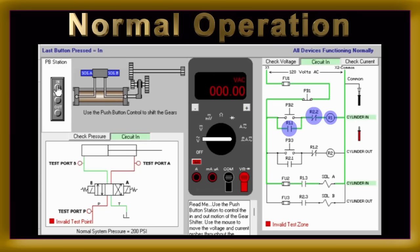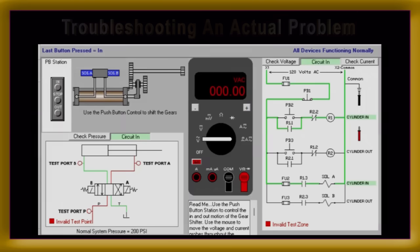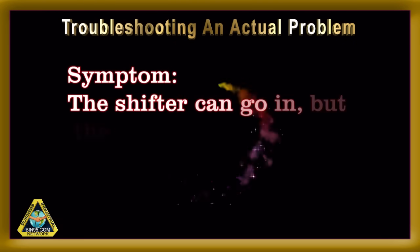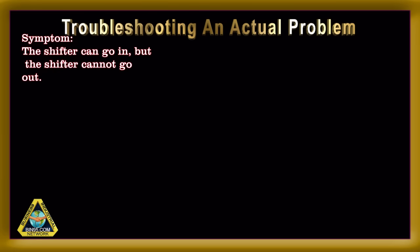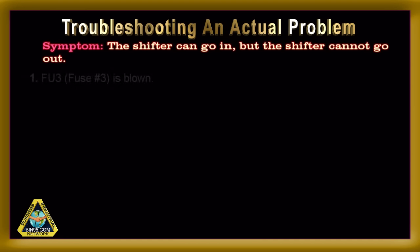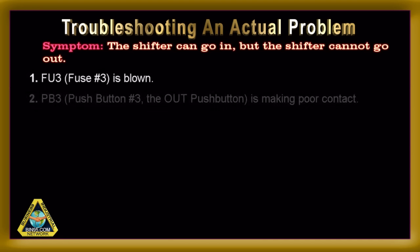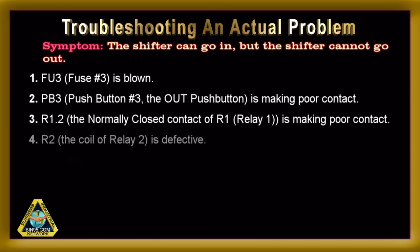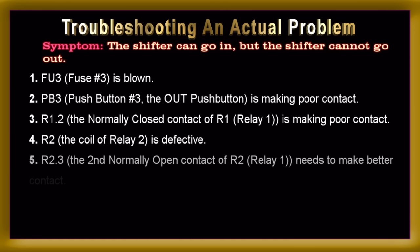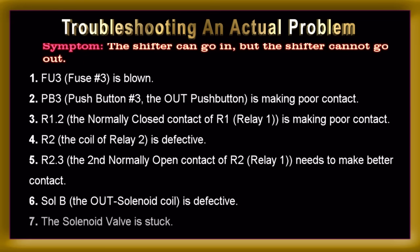Next, let's look at troubleshooting an actual problem. The symptom: the shifter can go in, but the shifter cannot go out. That symptom can have one of the following seven causes with this circuit. Using a guessing game, hit-and-miss troubleshooting method, you could go down a rabbit hole while checking all seven. Let's see how using the two-step trace troubleshooting method dramatically simplifies things and reduces troubleshooting downtime.